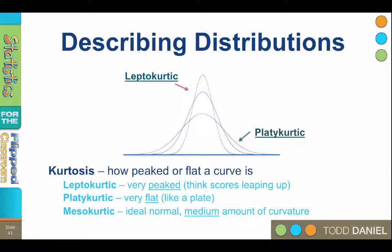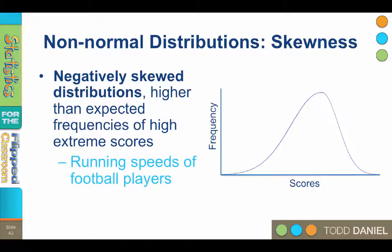Another thing that can happen to a curve is when the scores are pulled out in only one direction. When the scores are dragged out in only one direction, this creates a skew in our curve. Therefore, we need to talk about the skewness of our distribution.